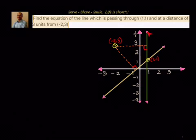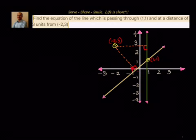So this is one line which will satisfy the condition that it passes through (1,1) at a distance of 3 units. We will find out both equations of the line. We know this equation is x = 1, but the other equation we will try to find out. This line is passing through (1,1) and is at a distance of 3 units from the point (-2,3). Now let's write down our approach.